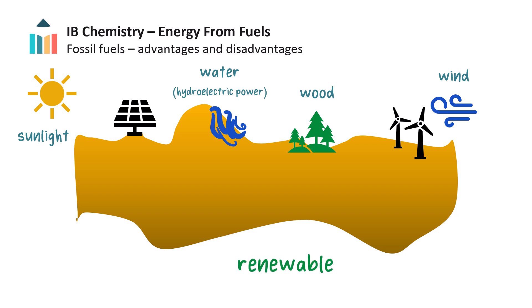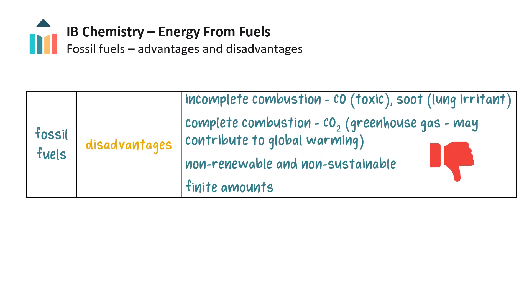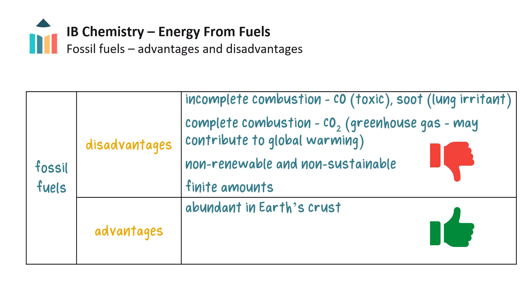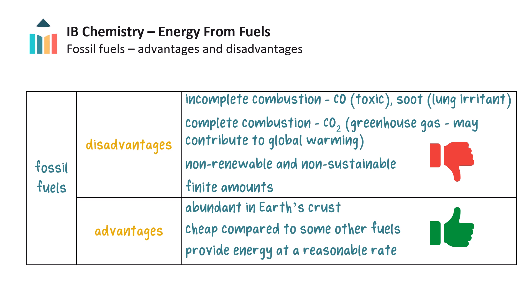This means that as long as we plant and grow new trees at the same rate as we are cutting trees down to use for fuel, then we won't run out of this energy source. Now that we know some of the disadvantages of using fossil fuels, let's investigate some advantages. Fossil fuels are abundant in the Earth's crust, relatively affordable, and provide energy as they burn at a reasonable rate, meaning they don't burn too quickly or too slowly, and they supply energy in large quantities.